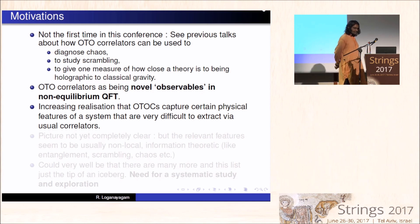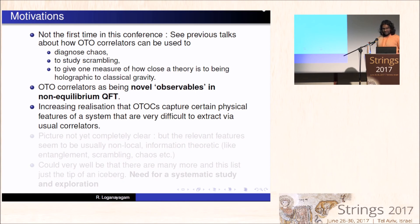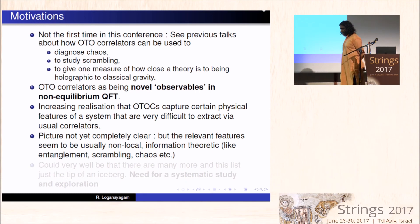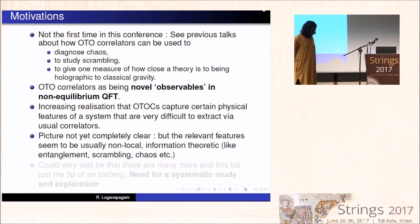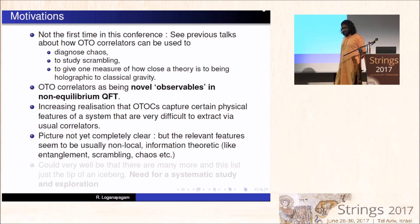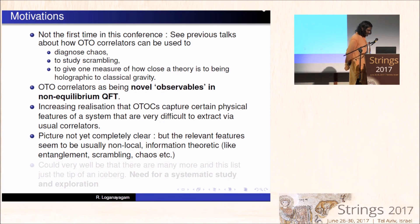In practice, out-of-time-ordered correlators are a slightly easier route to certain things rather than studying the usual correlators and trying to do everything by analytic continuation. The picture is not yet completely clear, and this is one of the things I would like to understand. The Schwinger-Keldysh correlators and formalism has been studied for many decades and we have a lot of understanding of it, but there are many things not yet understood that are not there for out-of-time-ordered correlators.